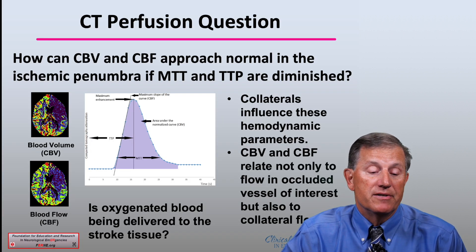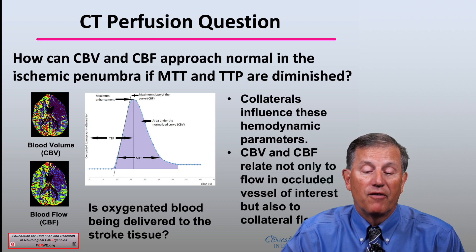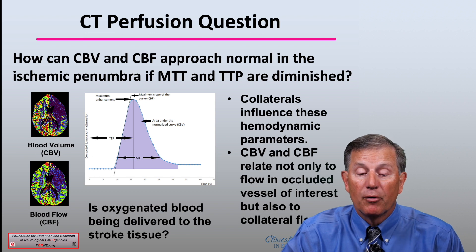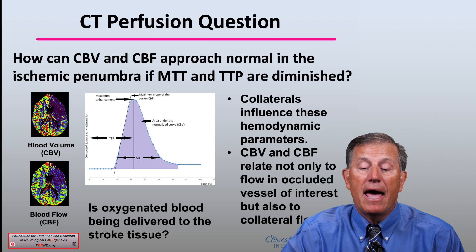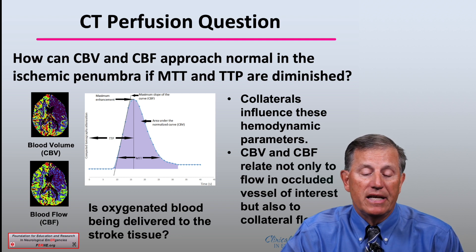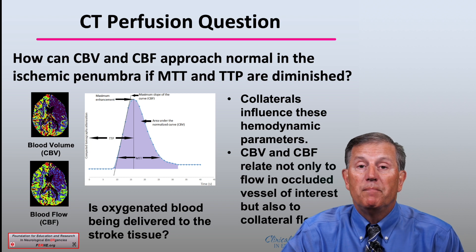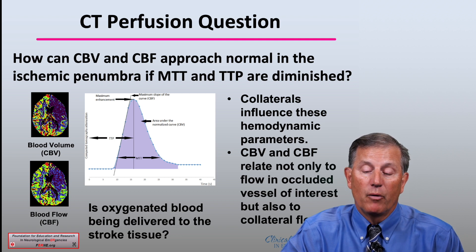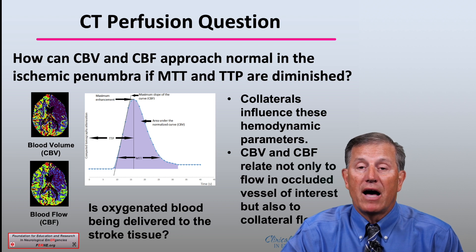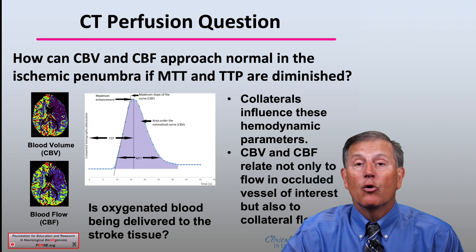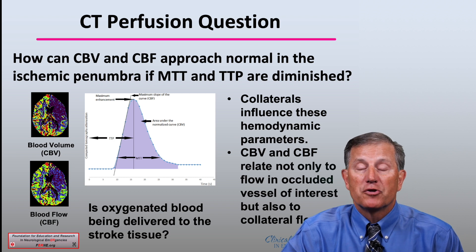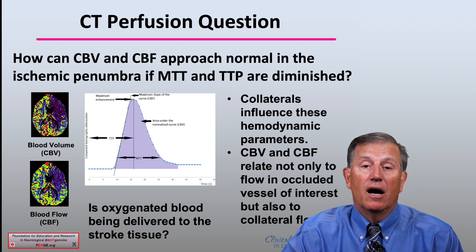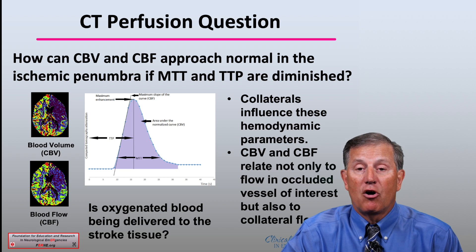The CT perfusion question is: how can cerebral blood volume and cerebral blood flow approach normal in the ischemic penumbra if there is a vascular lesion and mean transit time and time to perfusion are diminished? How is oxygenated blood being delivered to the stroke ischemic penumbra tissue? The answer is it is likely related to collaterals, which influence these hemodynamic parameters. Cerebral blood volume and cerebral blood flow relate not only to the flow in the occluded vessel of interest, but also to collateral flow and the characteristics of those collateral vessels, which may be dilated and hence cause a diminished time to peak or mean transit time.